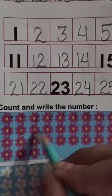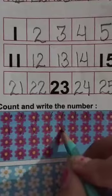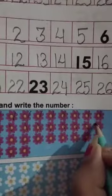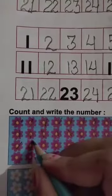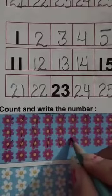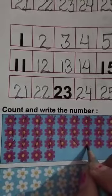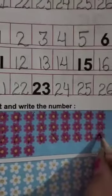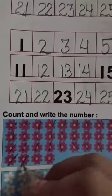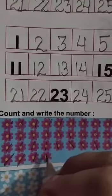11, 12, 13, 14, 15, 16, 17, 18, 19, 20, 21, 22, 23, 24, 25, 26, 27, 28, 29, 30. And after that? 31, 32, 33. And 34. So here we can write what? 34.